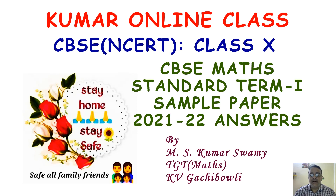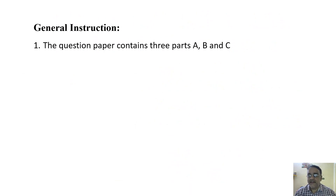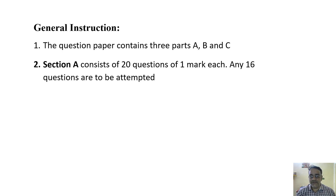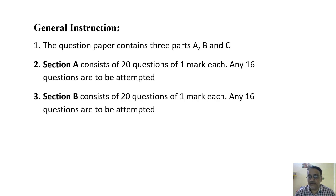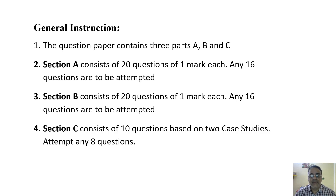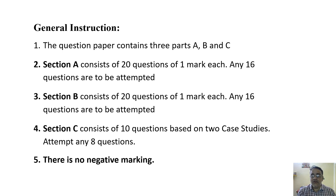Let us start the session. Today we are going to do the CBC Math Standard Thermal sample paper, which was published a few days back. Let us start with the general instructions. The question paper contains three parts: A, B, and C. Section A consists of 20 questions of one mark each, and any 16 questions are to be attempted. Section B also has 20 questions of one mark each, and any 16 are to be attempted. Section C consists of two case study based questions, with 10 questions total — five in each case study — and any eight questions are to be attempted, four from each. There is no negative marking and no assertion-reasoning based questions in mathematics.